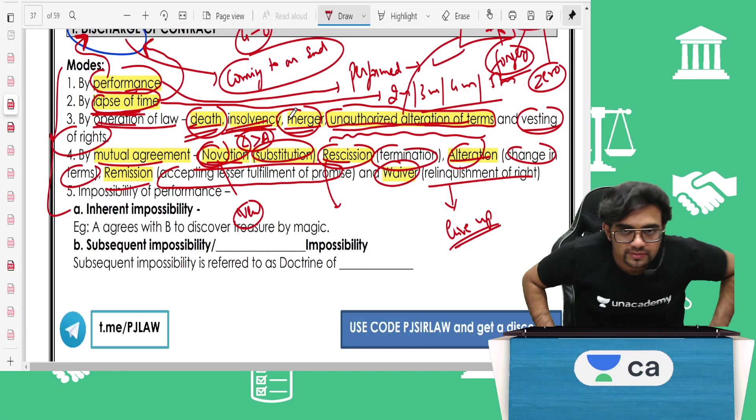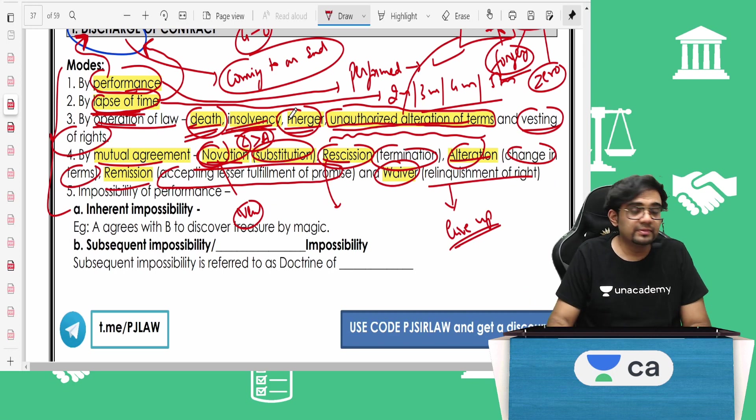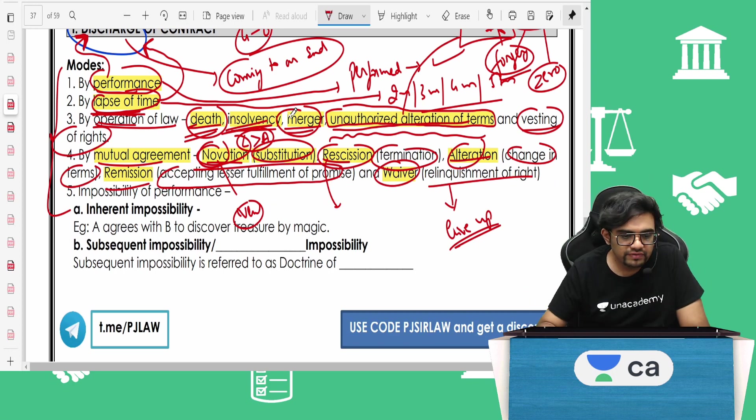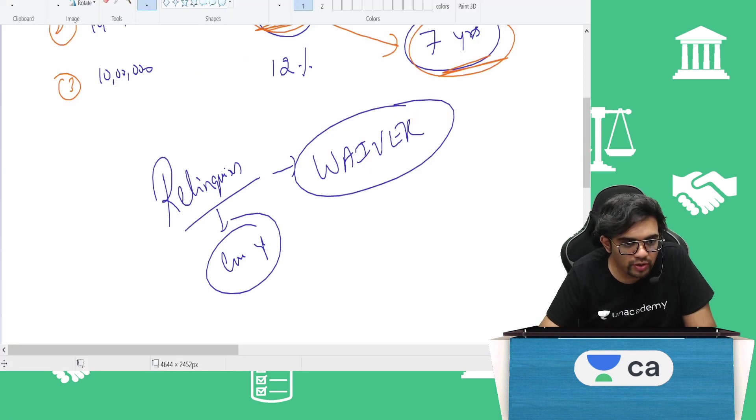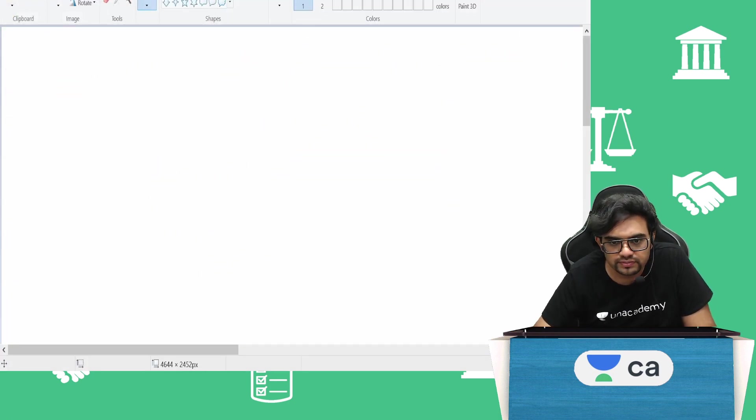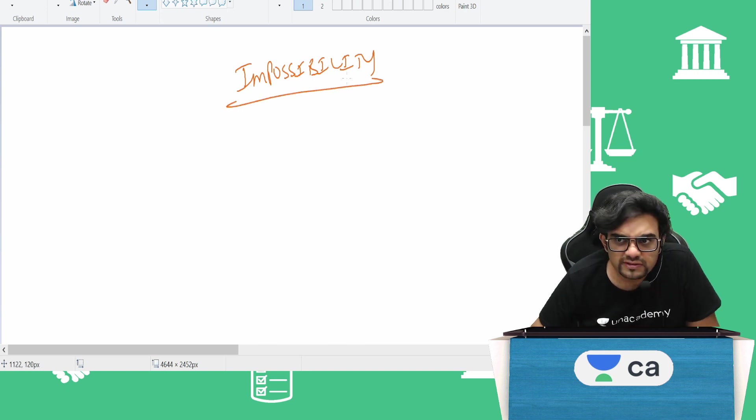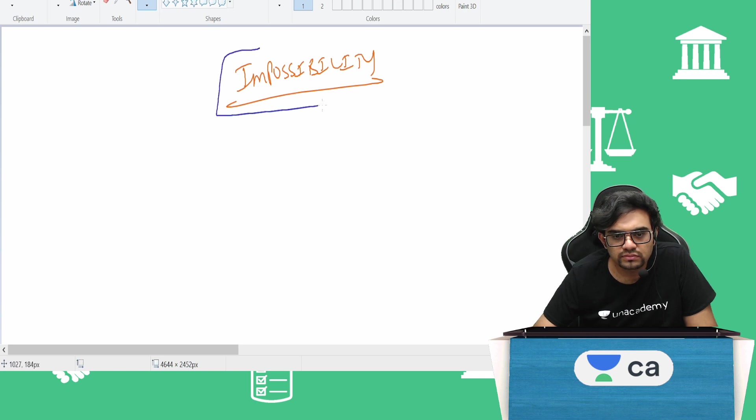So next concept is the concept of impossibility. In impossibility, we will discuss this is the concept capsule, very important for the exam. Impossibility of the performance. Two types.